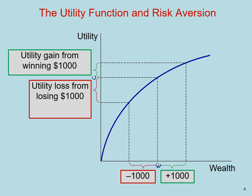If that's the case, winning the $1,000 would put you at wealth level WH and utility level UH. Losing the gamble will put you at a wealth level WL and a utility level UL. You can clearly see that the utility gain from winning $1,000 — that vertical distance — is much smaller than the loss in utility from losing that bet. And that is essentially risk aversion.